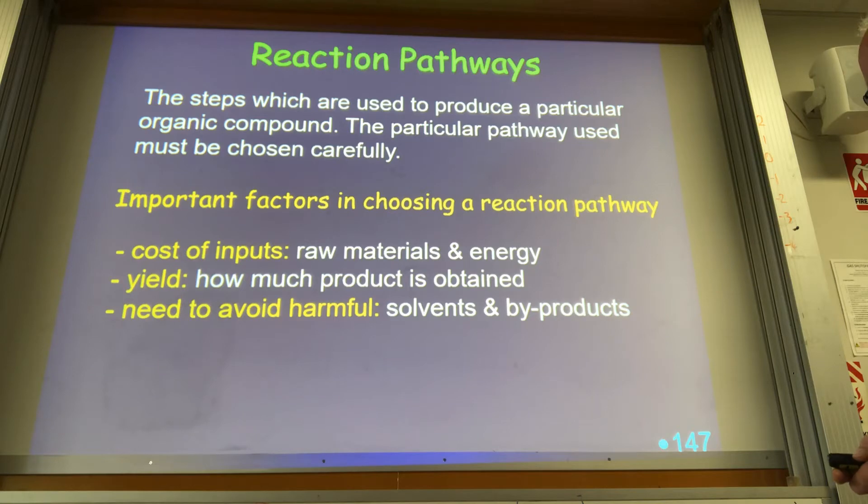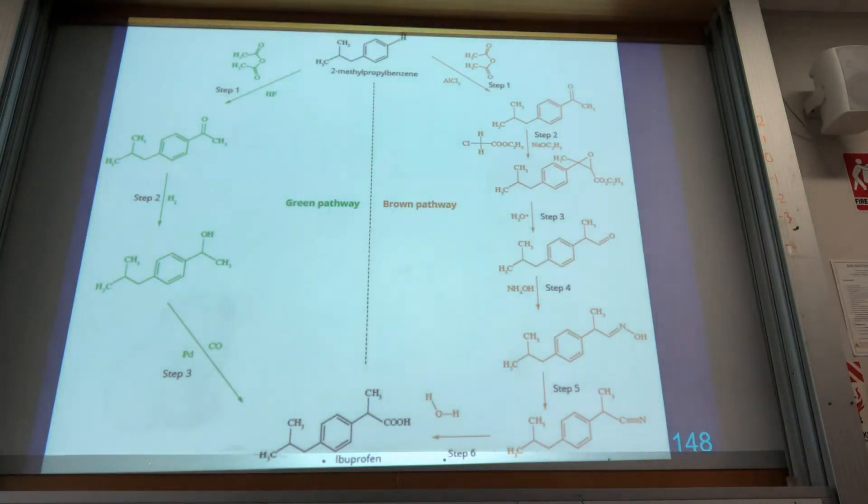You also need the one that avoids nasty toxic chemicals, whether they be solvents, whether they be byproducts. The classic is the synthesis of ibuprofen. The original pathway that was developed when the molecule was first produced widely was this one here, and it involves lots and lots of steps and lots and lots of bits being wasted as we go along.